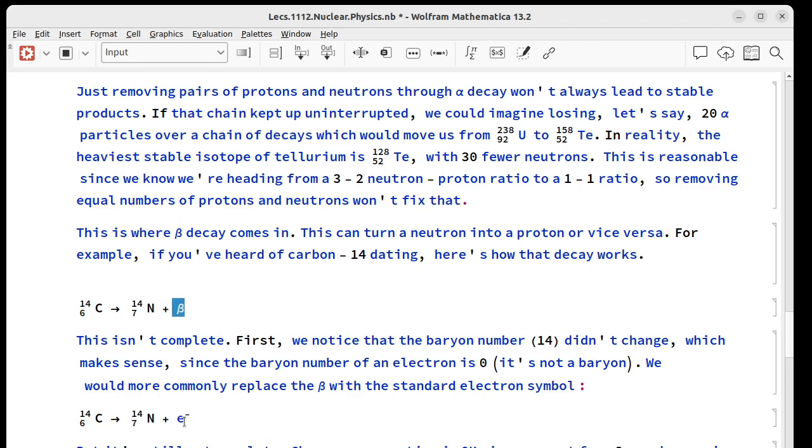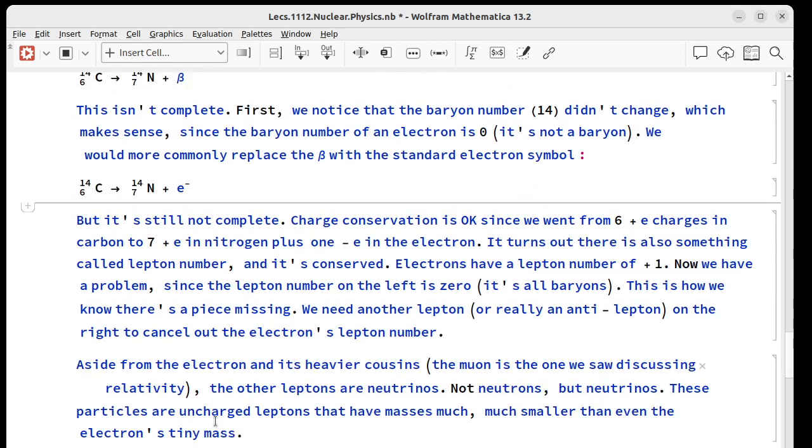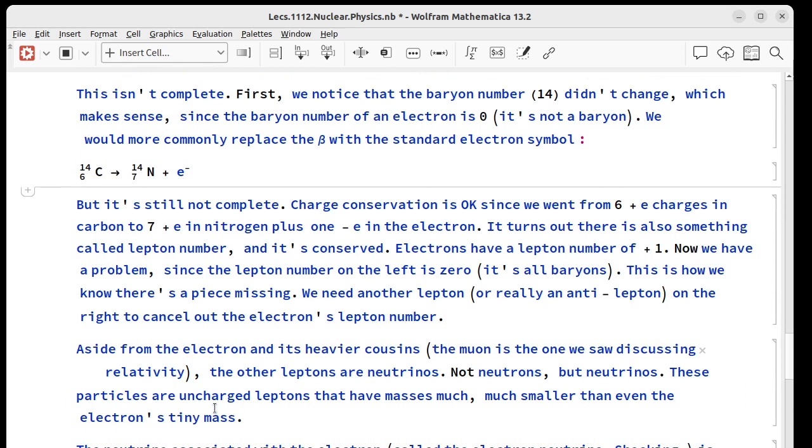Usually, rather than beta, what you put in is the standard symbol for an electron, so we might write it like this. However, this is still not a complete expression. The charge conservation is okay. Energy conservation is okay. Baryon number conservation is okay. But there's also something called lepton number, which has to be conserved. Leptons, that means light particle. Electrons have a lepton number of plus 1. And now we've got a problem, because lepton number of this carbon and this nitrogen are both 0. So we can't just spontaneously go from lepton number of 0 to 1. So we've got to have something else on this output to cancel out the electron's lepton number. It can't be an anti-electron, because that would cancel out the charge too, and screw that up.